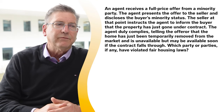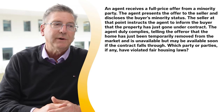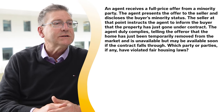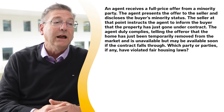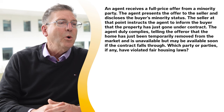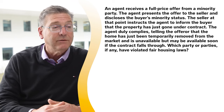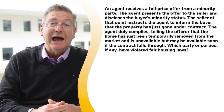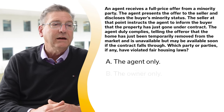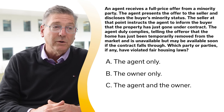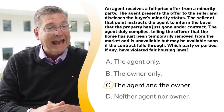An agent receives a full price offer from a minority party. The agent presents the offer to the seller and discloses the buyer's minority status. The seller instructs the agent to inform the buyer that the property has just gone under contract. The agent complies, telling the buyer that the home has just been temporarily removed from the market and is unavailable, but may be available soon if that contract falls through. Which party or parties, if any, have violated fair housing laws? A, the agent only; B, the owner only; C, the agent and the owner; or D, neither agent nor owner. The correct answer is C, the agent and the owner.